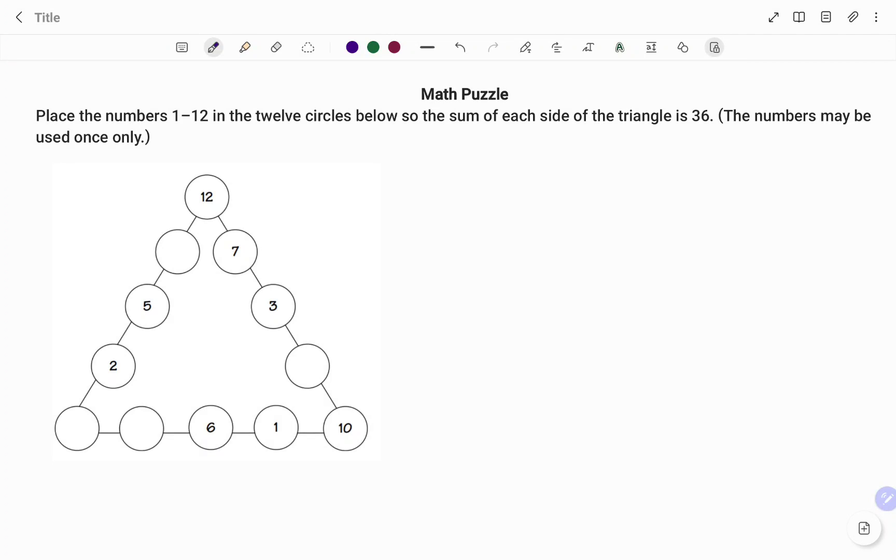Hi everyone, this is your math guru. In this video, I'm going to show you how to solve the following math puzzle. We have to place the numbers 1 to 12 in the 12 circles below so the sum of each side of the triangle is 36. The numbers may be used once only.